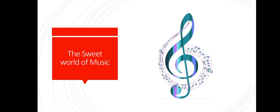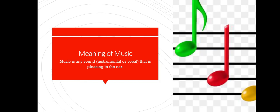Music is something so sweet. That's why I've written 'the sweet world of music,' because every time you walk, you can have a song in your mind, you can hear someone sing, you can hear a song played by someone on an instrument or on a phone. So music is very sweet. First we are going to look at the meaning of music. Music is any sound — either instrumental or vocal — that is pleasing to the ear. Everything that you hear that is pleasing to your ear, that makes you feel good, that's music. It can be played on a guitar, keyboard, organ, or someone can be singing it. That's music because it's pleasing to your ear.